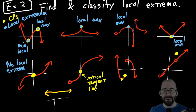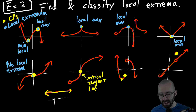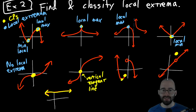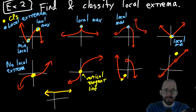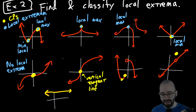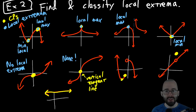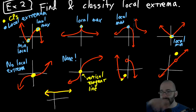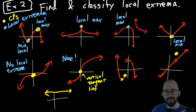This is a break in the pattern. In the first four, every critical point was also a local extremum, but here this yellow thing is a critical point with no local extremum, because the function gets bigger on one side and smaller on the other — so it's not locally the biggest or the smallest. It's the same with the next one: there are none. Any point you choose on this graph is surrounded by points that are both bigger and smaller.